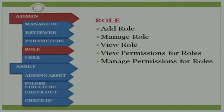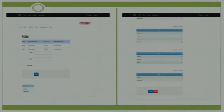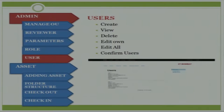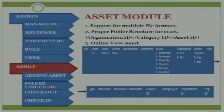For example, any user can add an asset but cannot delete or review it — permissions are assigned accordingly. When editing permissions for a role, a page appears with all modules and permissions under those modules. The admin just edits and those permissions are stored in the database. When a user of that role logs in, they can only access those assigned permissions. The admin can create, view, and delete users, and can also edit all users. Users can edit their own data as well.